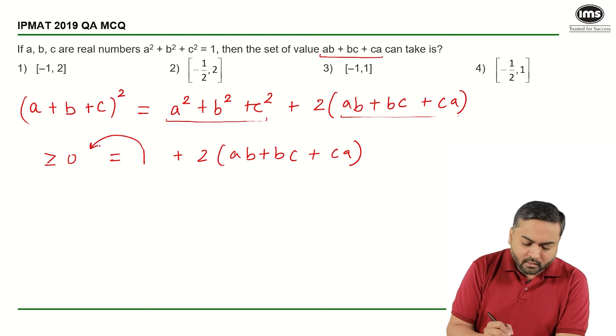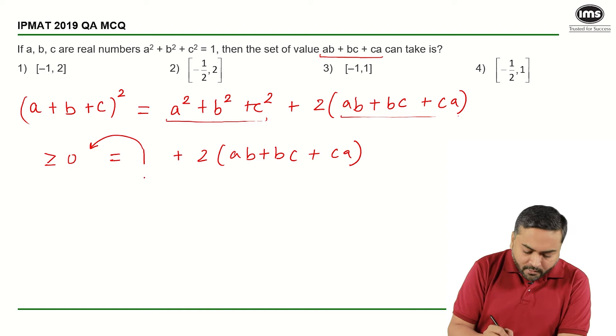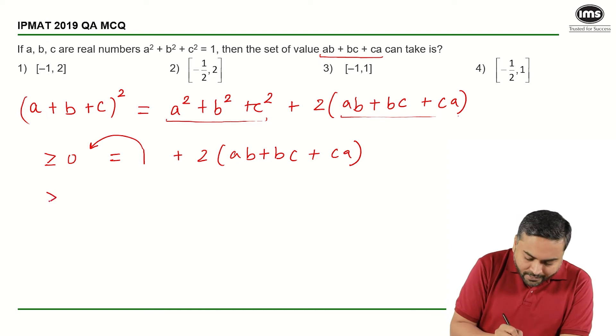Now, if you take 1 on the side, what will you get? Greater than or equal to -1 and if you divide by 2, this is what I get.